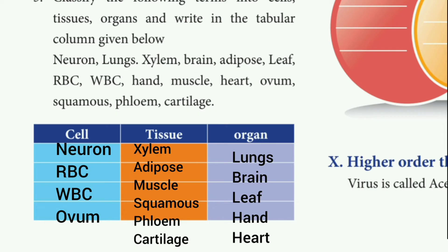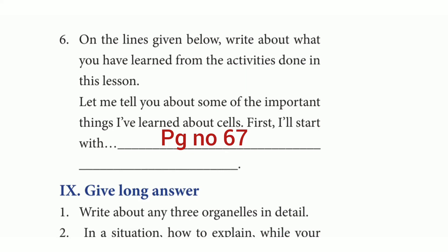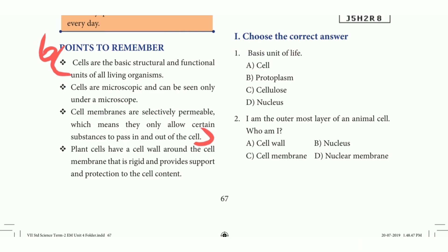Then fifth question. The answer is cell: neuron, RBC, WBC, ovum. Then tissue: xylem, adipose, muscle. Then organ: lungs, brain, leaf, hand, heart. Then sixth one: Page number 67, first three points to remember under the heading. This is sixth question.